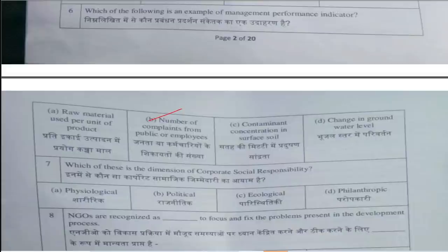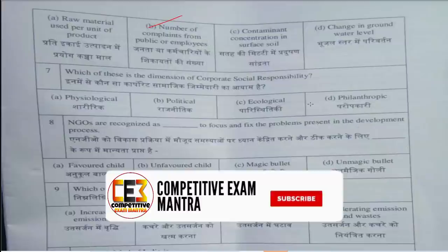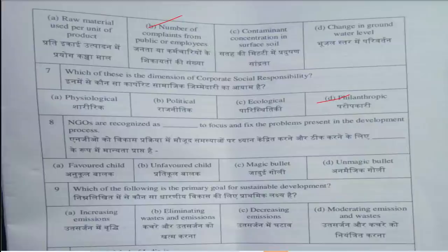Sixth question is: Which of the following is an example of Management Performance Indicator? Answer is option B, Number of Complaints from Public or Employees. Seventh question is: Which of these is the Dimensions of Corporate Social Responsibility? This answer is option D, Philanthropic. Eighth question: NGOs are recognized as what to focus and fix the problems present in the development process? Answer is option C, Magic Bullet.